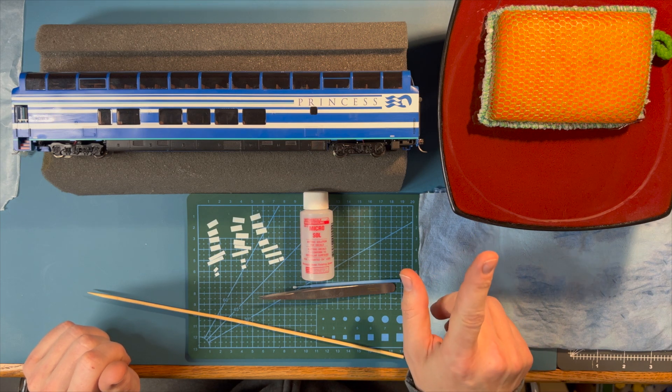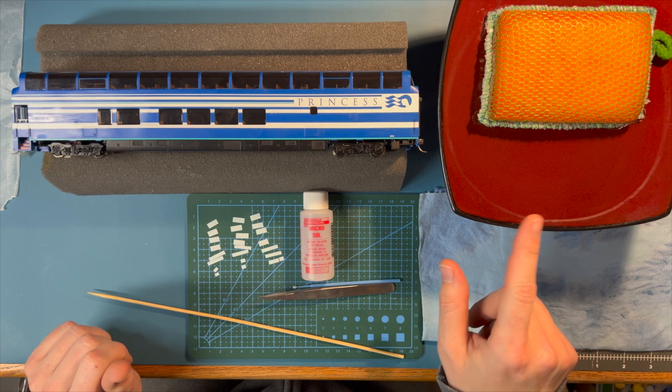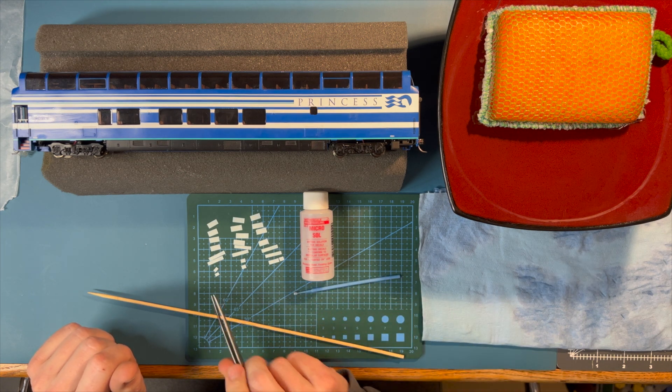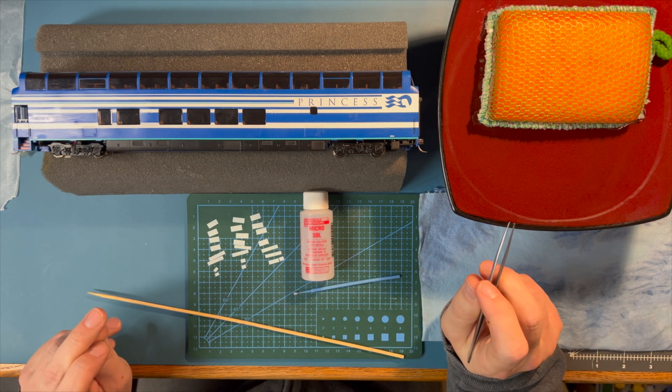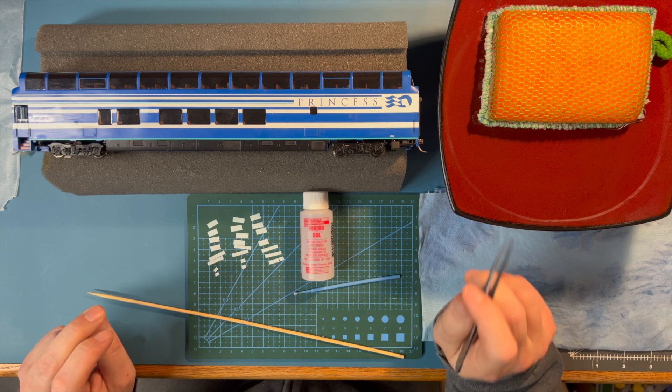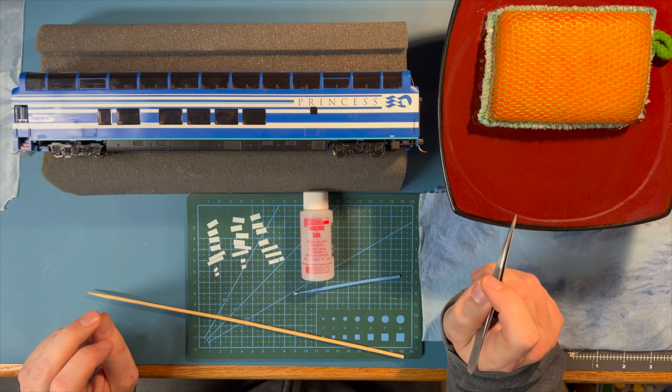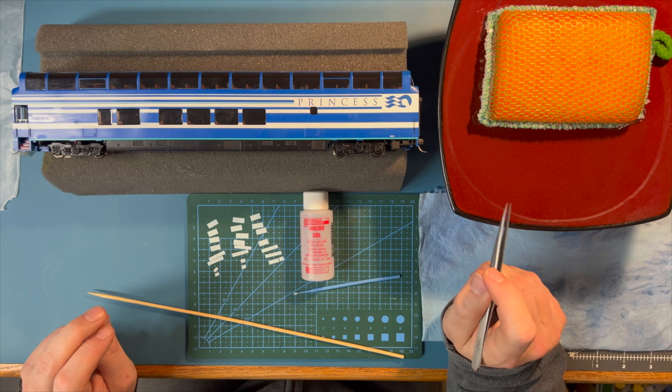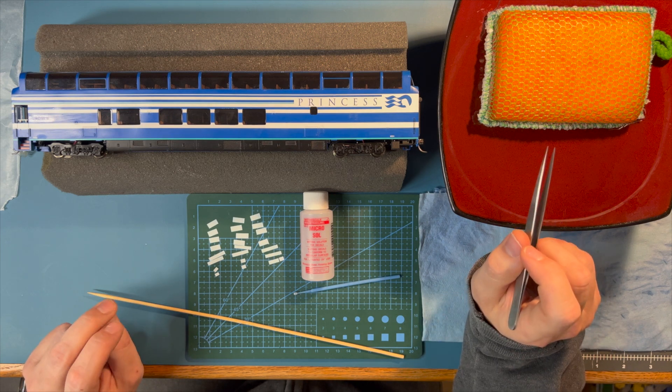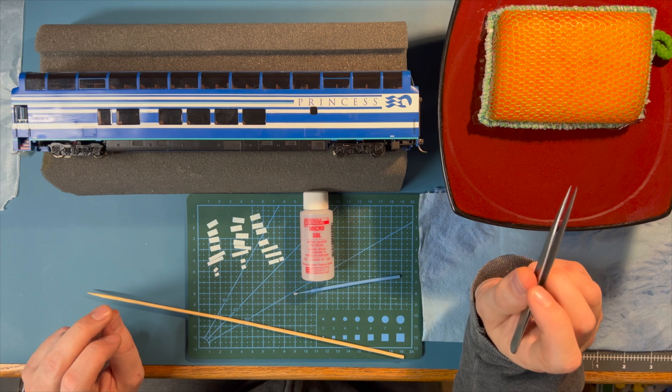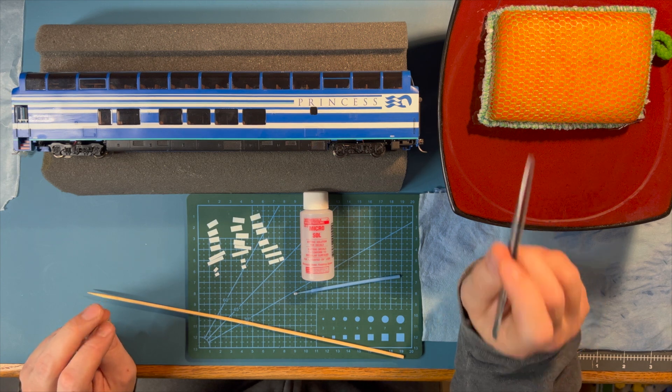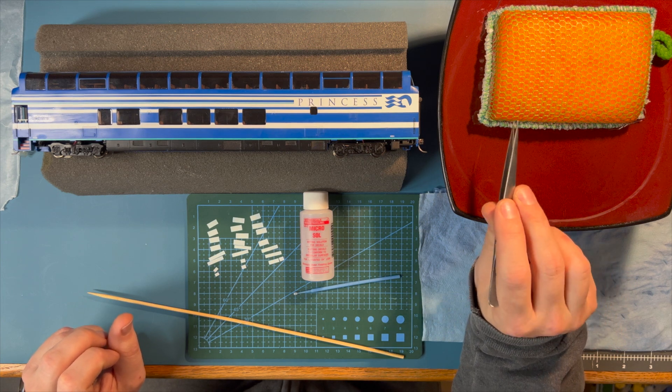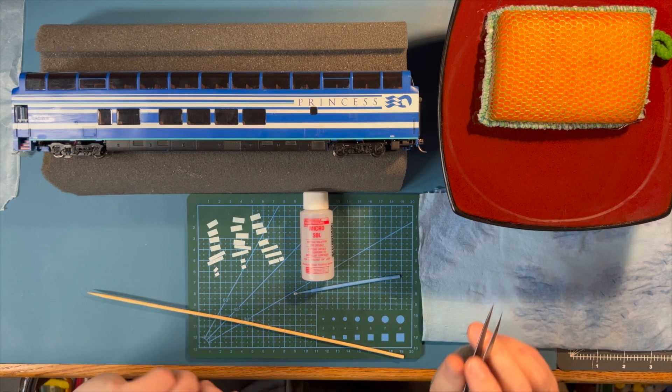I have my warm water and a sponge. Now I dip the decal I'm going to work with in the warm water and set it on the sponge. The longer it sits in the water, the more the adhesive dissolves. Setting it on the sponge allows it to release from the paper without having it float off the paper. And it gives me a better option of actually grabbing it off the sponge and being able to put it on the model.